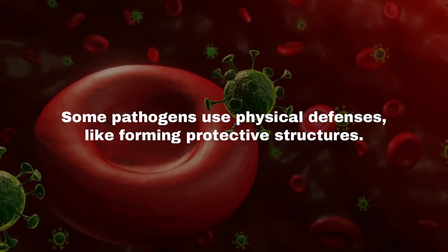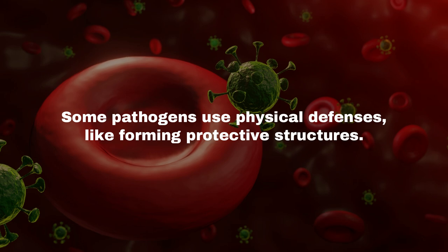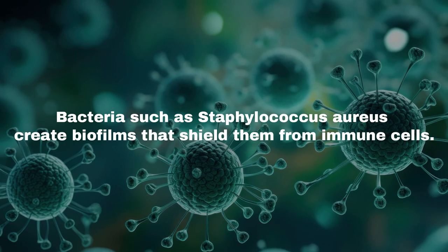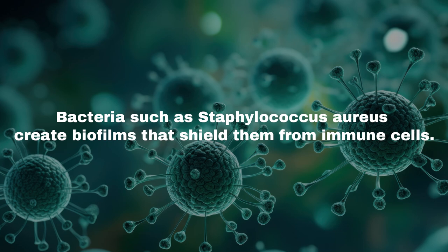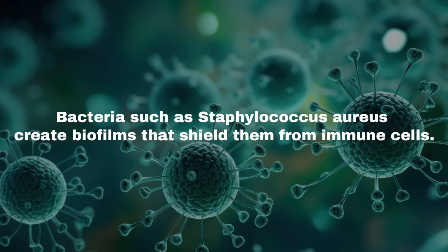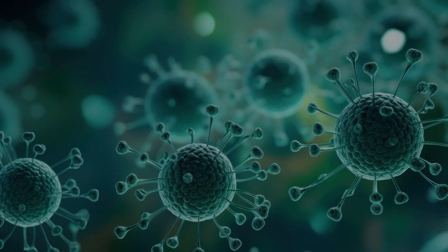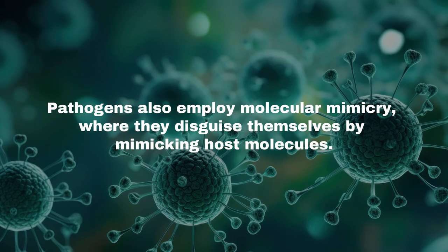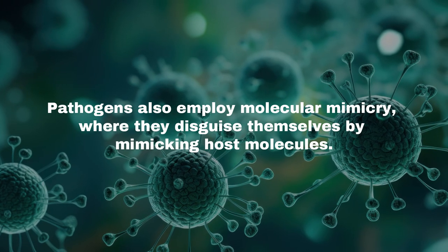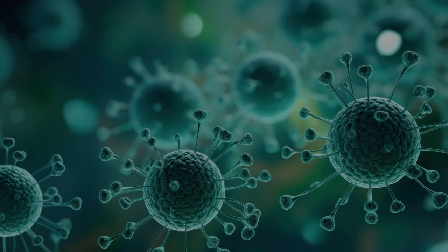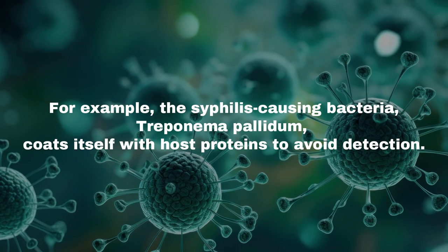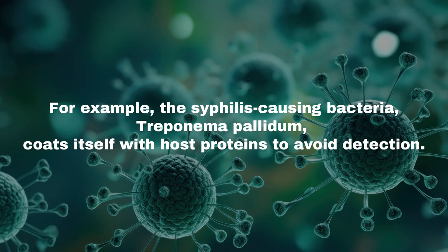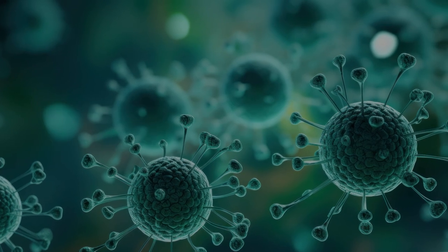Some pathogens use physical defenses, like forming protective structures. Bacteria such as Staphylococcus aureus create biofilms that shield them from immune cells. Pathogens also employ molecular mimicry, where they disguise themselves by mimicking host molecules. For example, the syphilis-causing bacteria, Treponema pallidum, coats itself with host proteins to avoid detection.